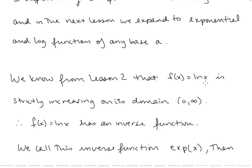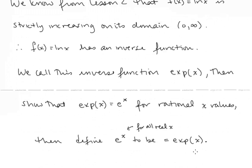We know from the last lesson that f of x equals ln x is strictly increasing on its domain, and therefore it has an inverse function. We're going to start by calling its inverse function exp of x. We'll then show that exp of x is actually the same as e to the x for all rational x values, and then define e to the x to be exp of x for all real numbers. So at this point, we know what the number e is and we know how to take e to the x for x rational — that's what was covered in pre-calculus. Now we want to fill in the gap and define e to the x on the entire real line.